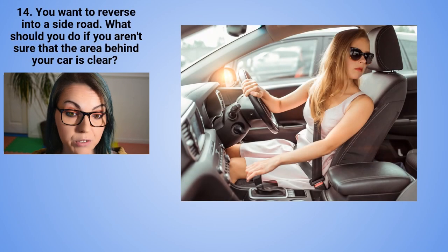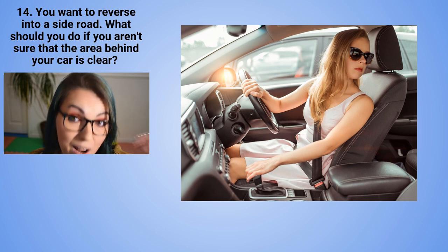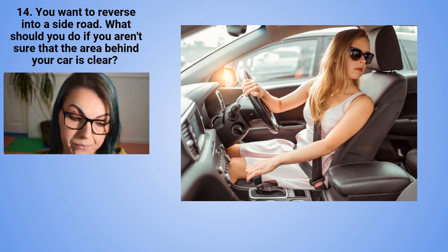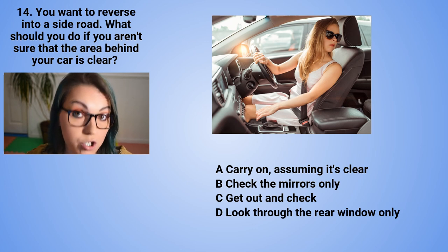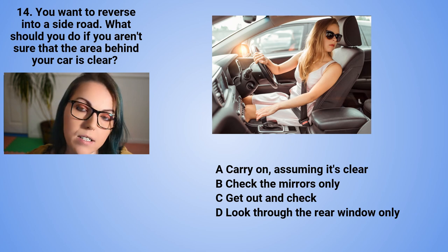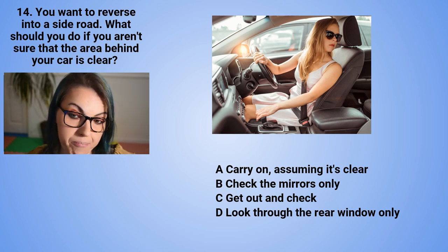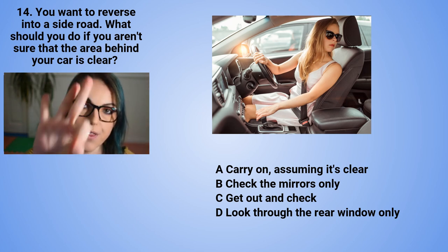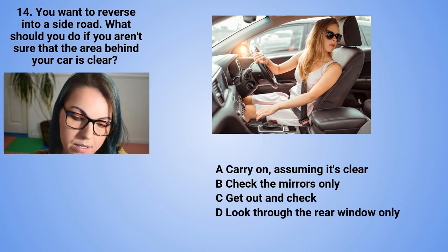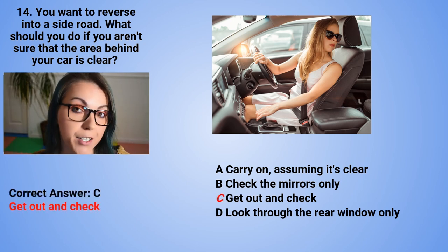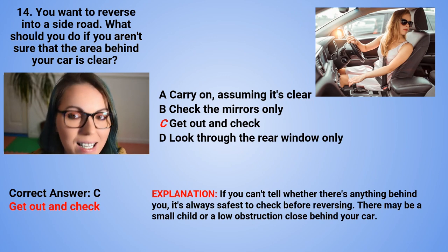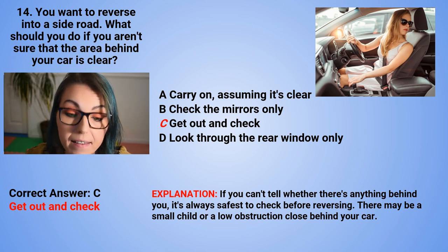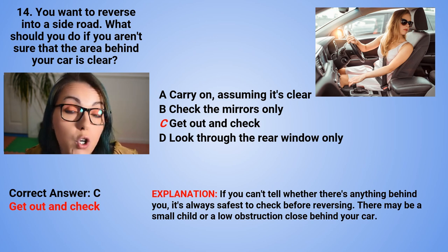Question 14: You want to reverse into a side road. What should you do if you are not sure that the area behind your car is clear? A. Carry on, assuming it's clear. B. Only check the mirrors. C. Get out of your car and check. Or D. Look through the rear window only. The correct answer is C — get out of the car and check. If you cannot tell whether there is anything behind you, it's always the safest option to check before you reverse. There may be a small child or a low obstruction close behind your car.